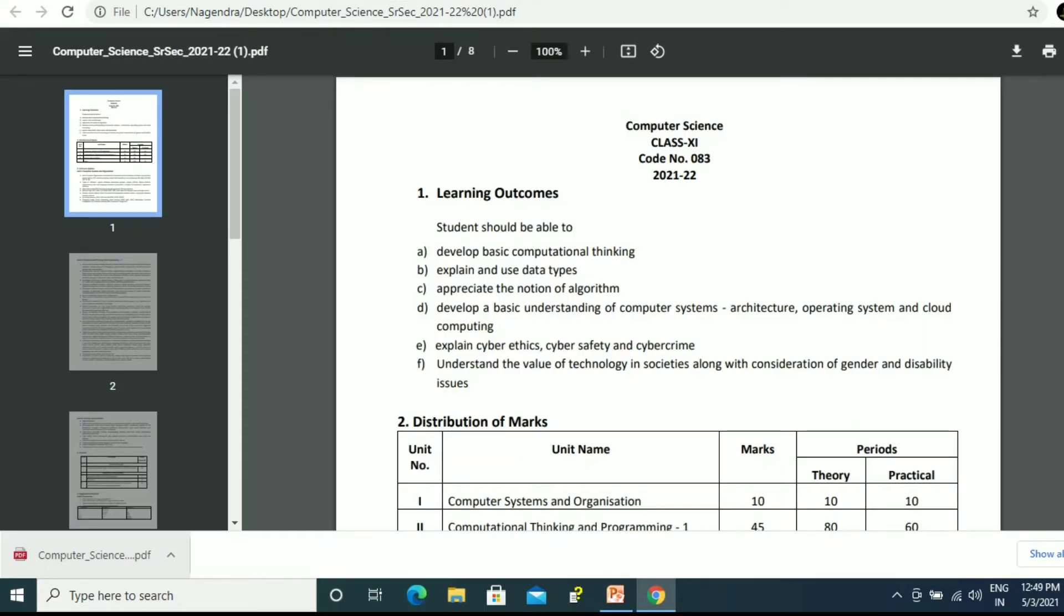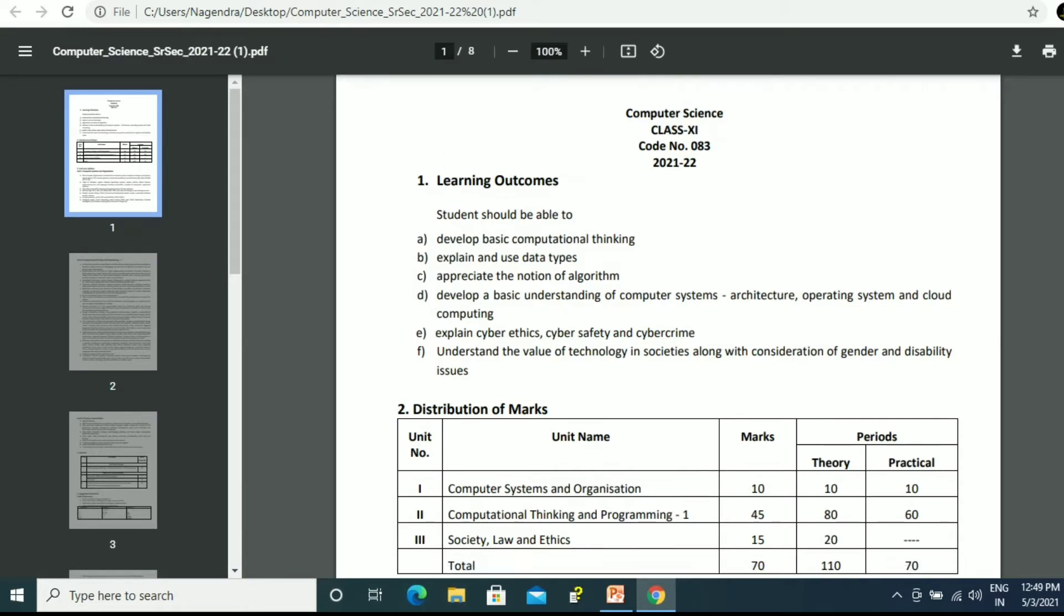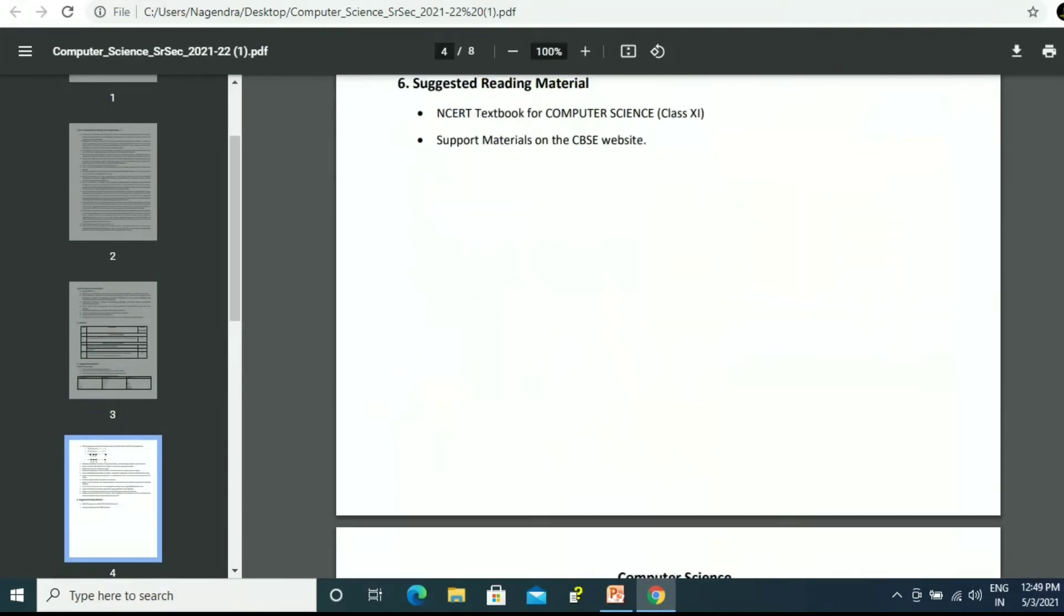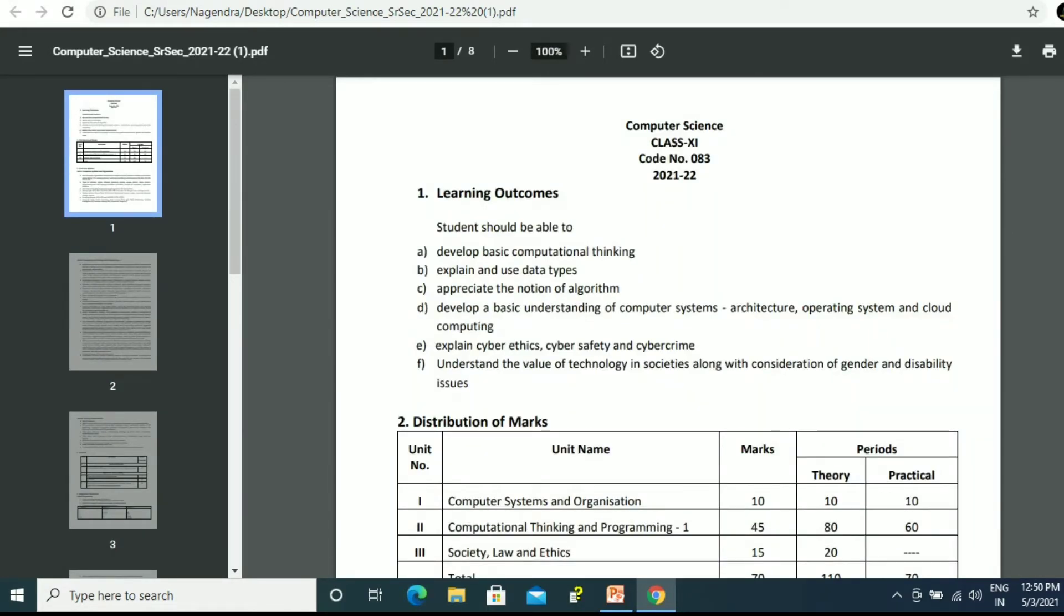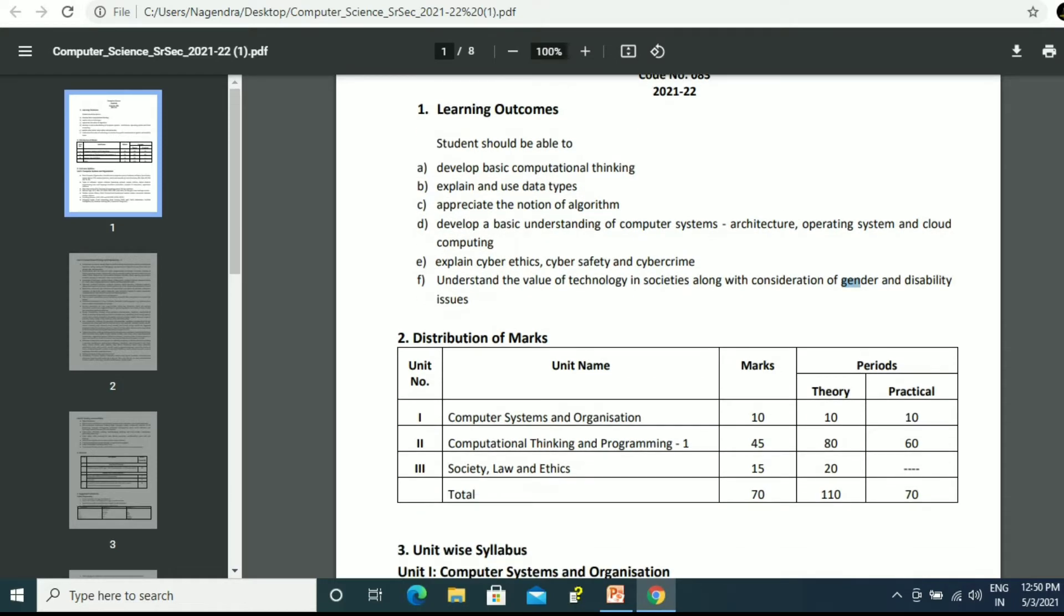This syllabus contains what and what parts you will be getting where in the book. Here, as I told, this syllabus is of class 11th and 12th both. On the top part you can see class 12th also in the bottom section, but we have to go for class 11th, so let's go to the top. The very first one is learning outcomes. What does it mean? Throughout the year, what you are going to learn after learning Python. The first thing is computational thinking, then data types, algorithms, architecture of operating system, cloud computing, cyber safety, crime, ethics, and finally data and disability issues. These are the learning outcomes.